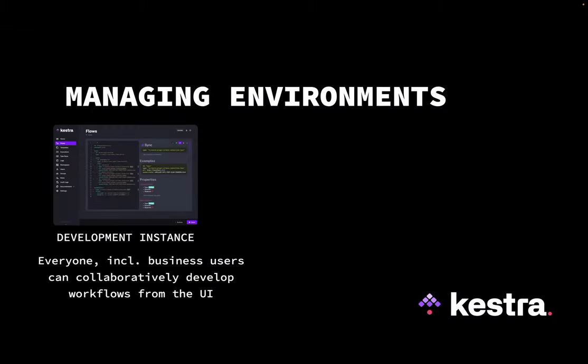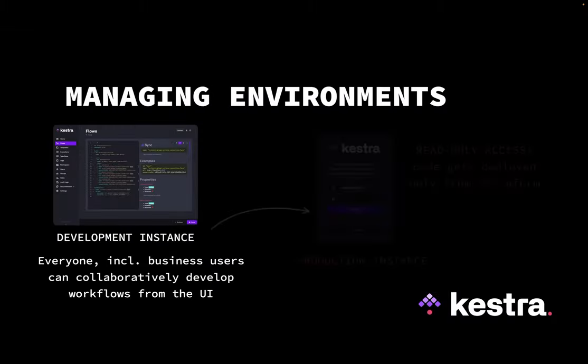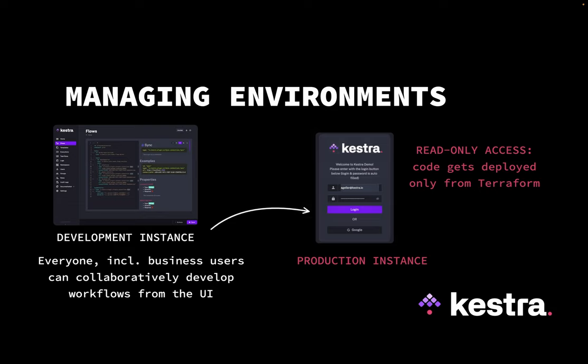We've covered the development phase, but what about the production environment? You typically would want to have read-only access in your production instance so that changes, additions, and deletions are made only after approval — for example, by opening a pull request or approving a Terraform Cloud Run. In order to accomplish a stable, maintainable, and reproducible environment, you want all production resources to get deployed only from Terraform. This way, you can accomplish the best balance of fast feedback loops during development, while also leveraging the benefits of infrastructure as code for production environments.